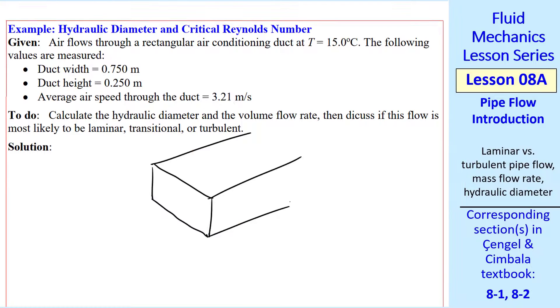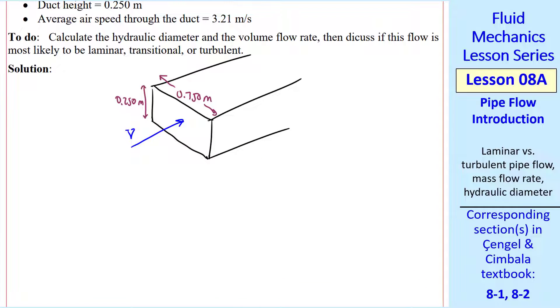Let's do an example. Suppose we have a rectangular air conditioning duct. Air flows through at a cool 15 degrees C, and we're given the duct width and the duct height, as well as the actual average speed through the duct. We want to calculate the hydraulic diameter, volume flow rate, and then try to determine if this is laminar, transitional, or turbulent.